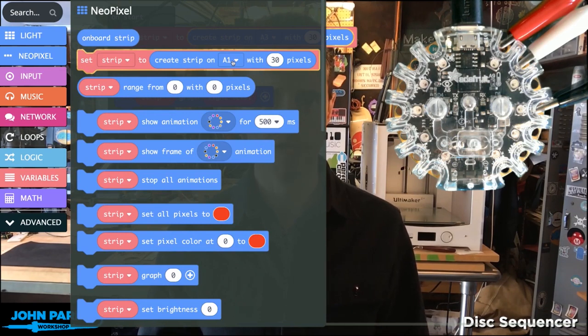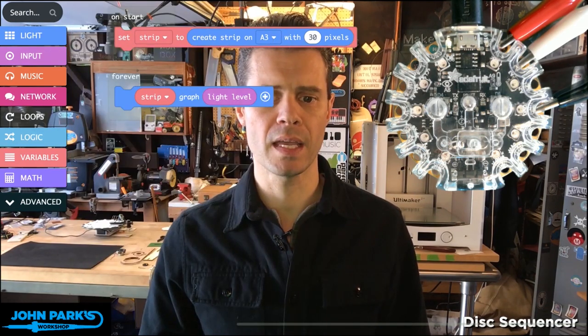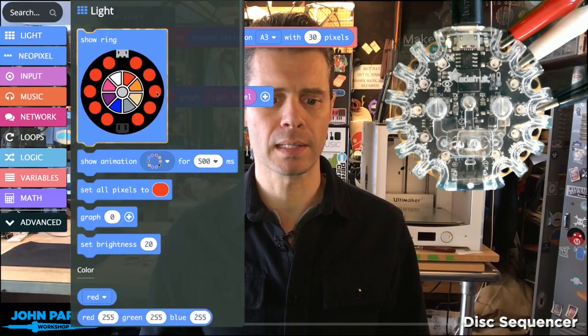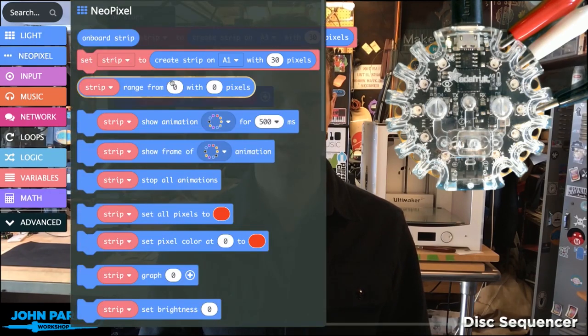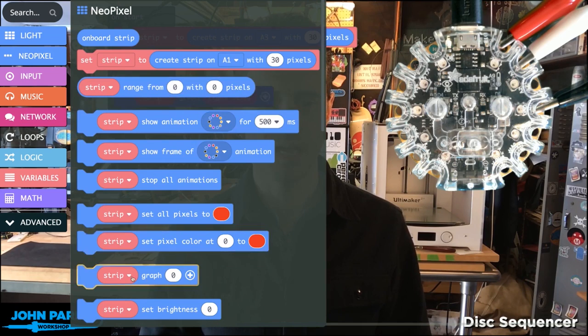I've got that in my start loop and then in my forever loop, what I've got is, again under Light Neo Pixel, I'm setting a strip graph. It defaults to zero and then you can add more things to it.